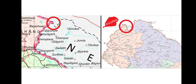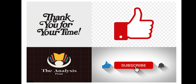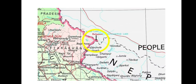Now, some facts about the Kalapani territory. Kalapani is a disputed territory between India and Nepal. While Nepal claims Kalapani to be part of its Darchula district, the region is administered by India as part of Pithoragarh district. Kalapani is located at an altitude of 3,600 meters on the Kailash Mansarovar route road. It borders Uttarakhand in India and Sudurpashchim Pradesh in Nepal.